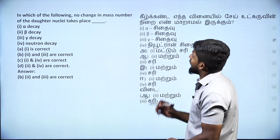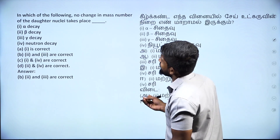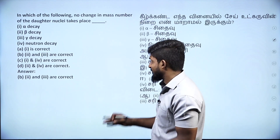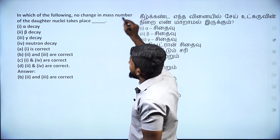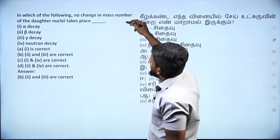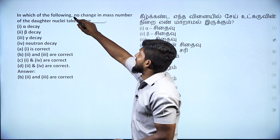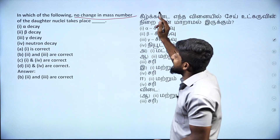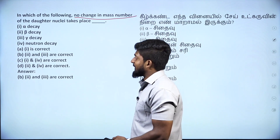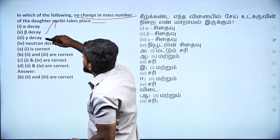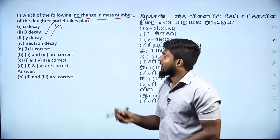In which of the following is there no change in mass number of the daughter nuclei? No changes in mass number — the answer is gamma decay.